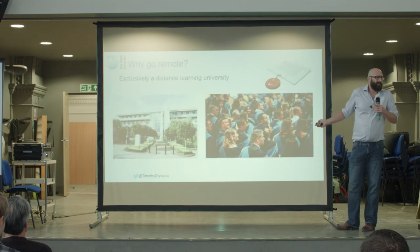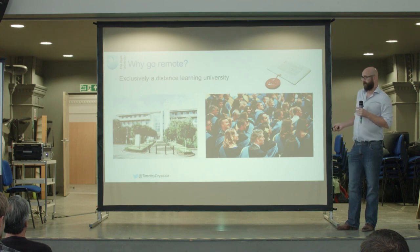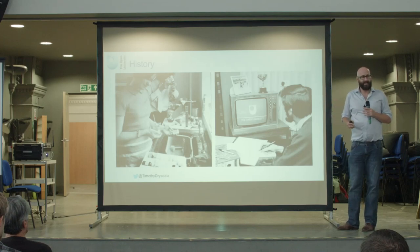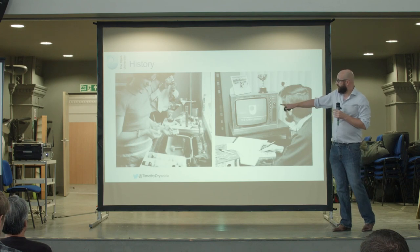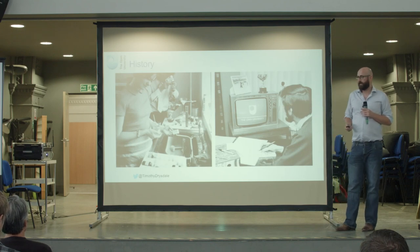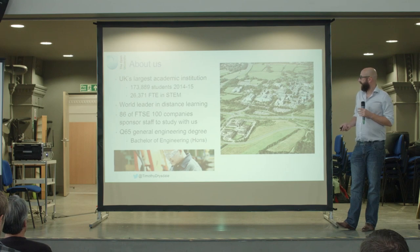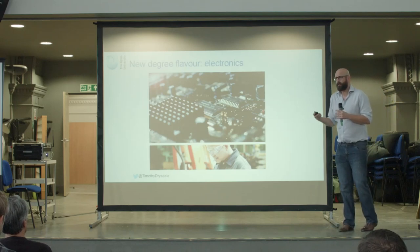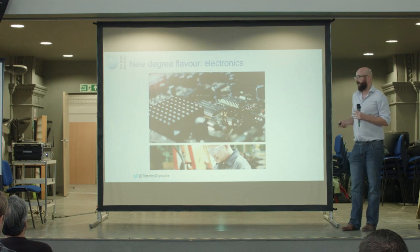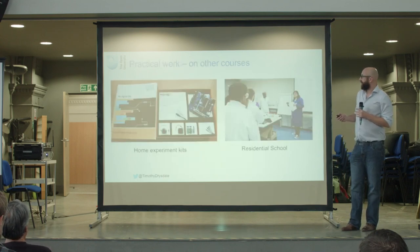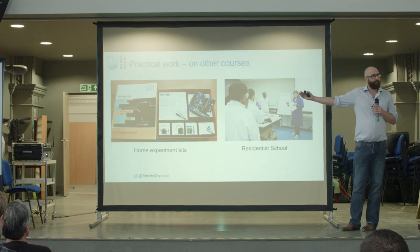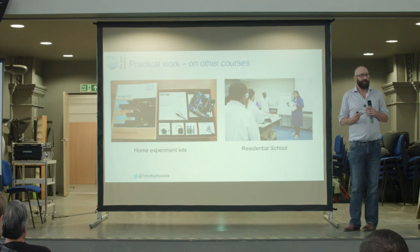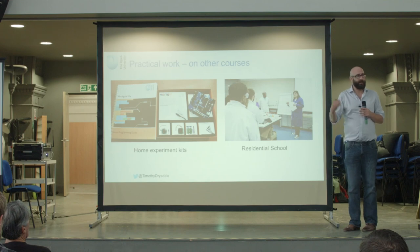Why did we go remote? The Open University is a distance learning university — we do degrees, but the students don't come on campus. We used to use the television to get lectures out there, but things have moved on. Something that's only very recently started to change is the use of home experiment kits. We have a new electronics course, and electronics you can't really do unless you're doing something with hardware. We want students to interact with stuff that is far too expensive to stick in the post and send one out to every student.